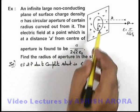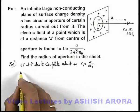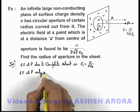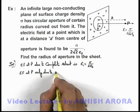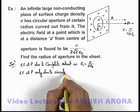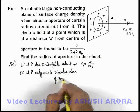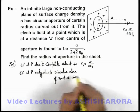And after carving out this circular aperture we can write electric field at P only due to circular disc of radius r is.